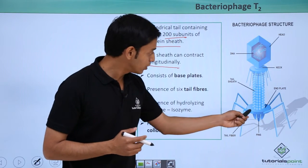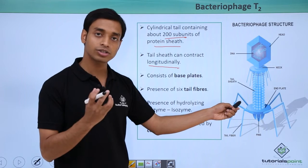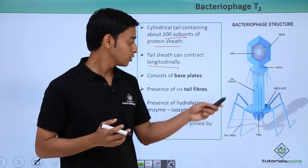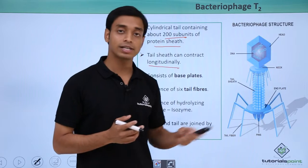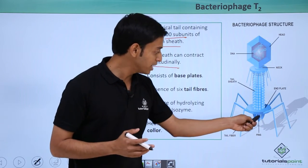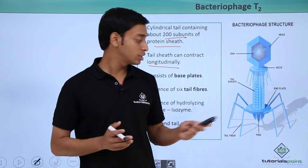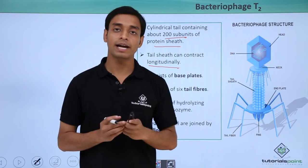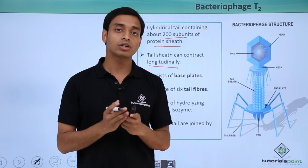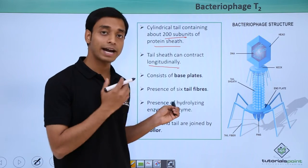The virus has base plates, which are hexagonal in structure. From each of these base plates arise six fibers known as tail fibers, and there are also six pin-like structures. An important property of these pins and tail fibers is that at their tips they carry hydrolyzing enzymes known as lysozymes.